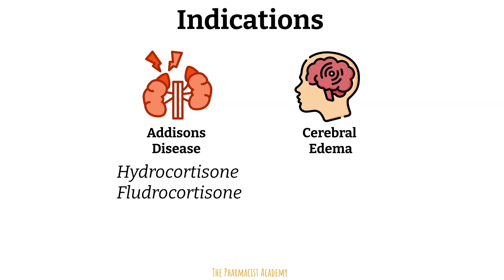For neurological conditions like cerebral edema, dexamethasone is used for its potent glucocorticoid activity and minimal mineralocorticoid activity, reducing the risk of fluid retention which can potentially exacerbate the condition.